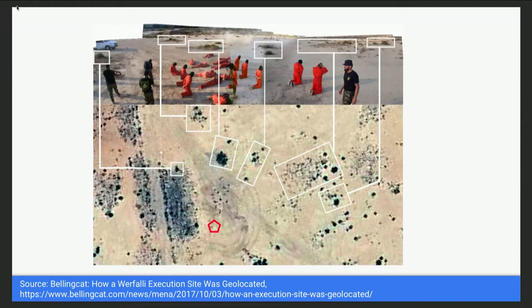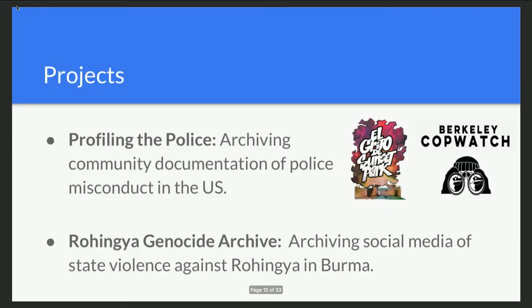These examples illustrate the growing importance of video as a source of evidence in human rights cases. They also show how factors like authenticity, provenance, safety and security of sources, identification, findability, and preservation all come into play in their usability and weight as evidence. Now I'd like to turn to two projects we've been working on in the past year, collaborating with partners to gather, preserve, and use human rights evidence.